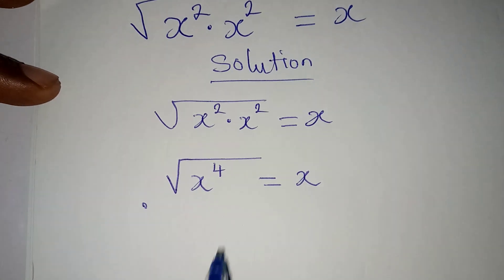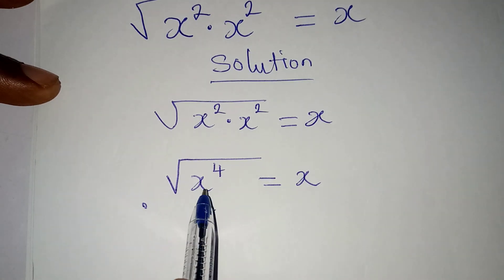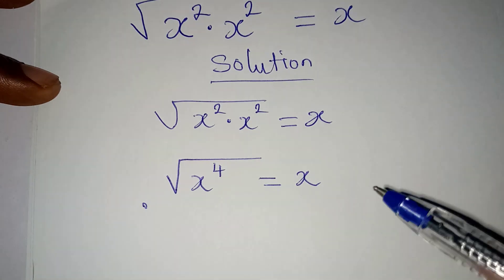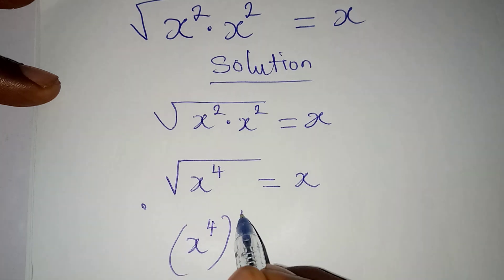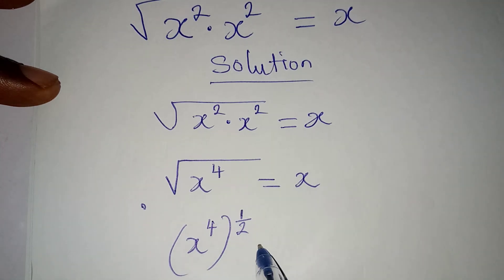Remember, when you have a square root, it means it is raised to the power of 1 over 2. So we are having x to the power of 4 raised to the power of 1 over 2, and this will be equal to x.